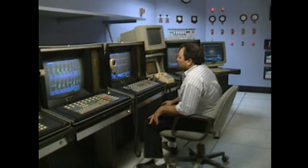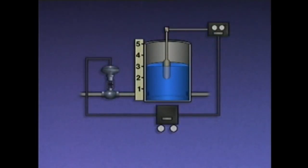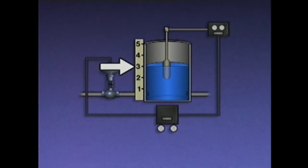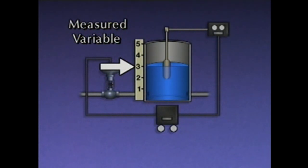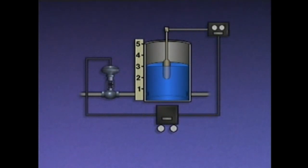To get a better understanding of how an automatic control system works, we'll use this simplified illustration of a system used to control the level of water in a tank. Since the level of the water is what's maintained at a desired value, it can be thought of as the controlled variable. It can also be thought of as the measured variable, because the control system uses it as a basis for making operating changes. The water level will remain constant as long as the flow of water into the tank equals the flow of water out of the tank.